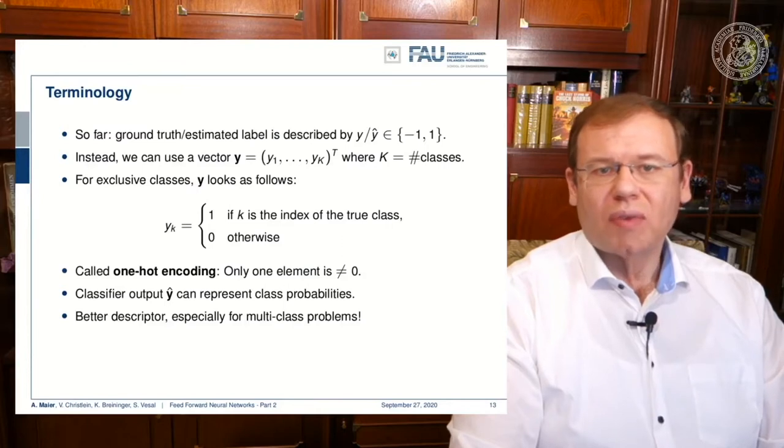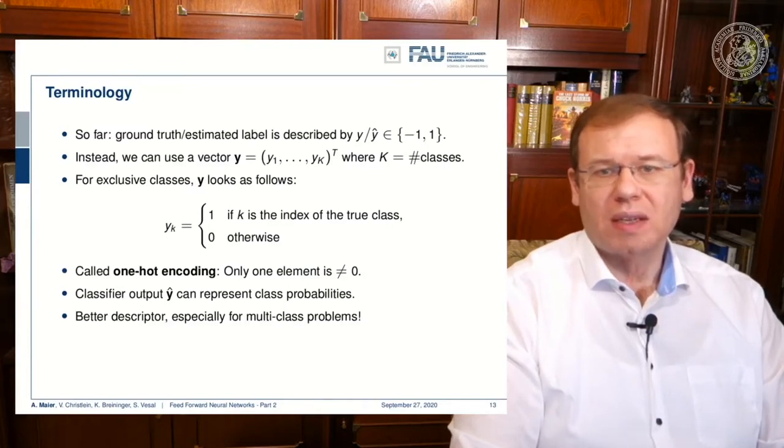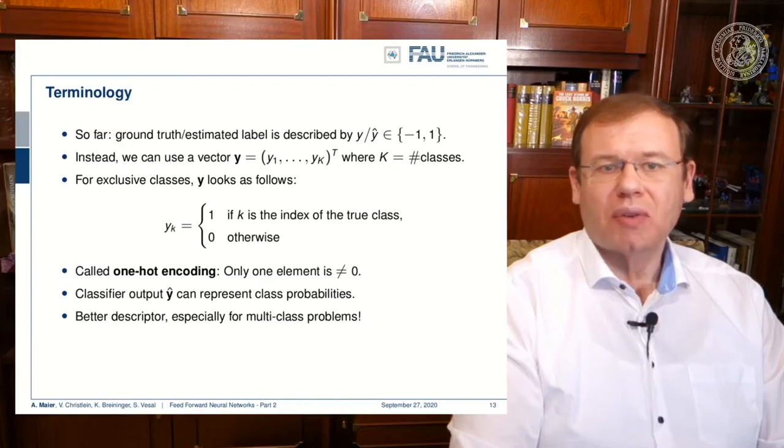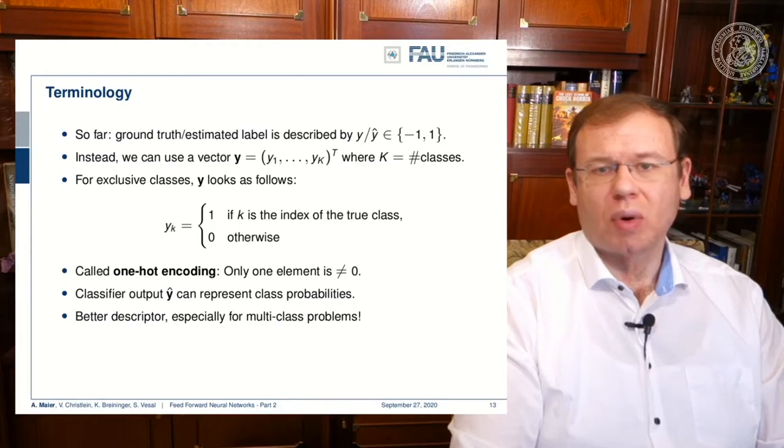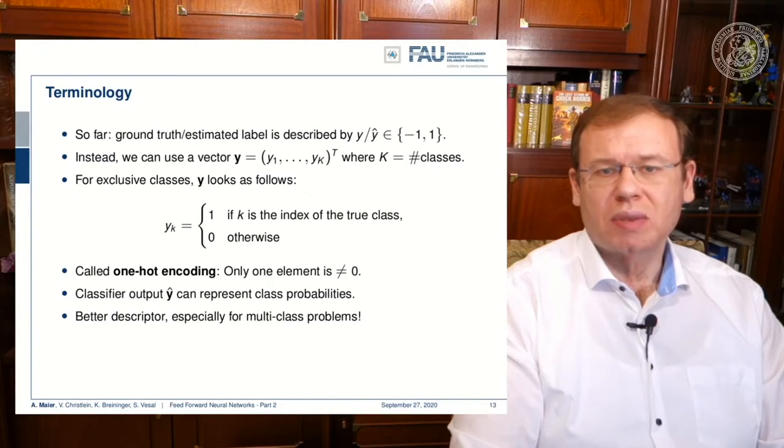Stuff that works best is really simple. So far we have described the ground truth labels by minus one and plus one, but of course we could also have some classes zero and one. This is really only a matter of definition if we do only a decision between two classes.